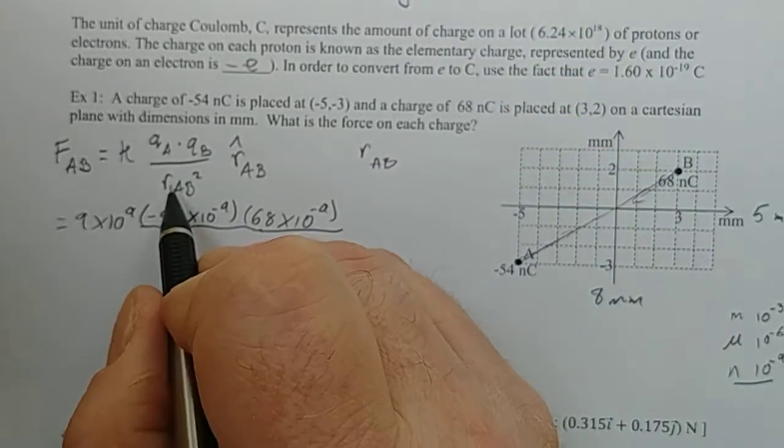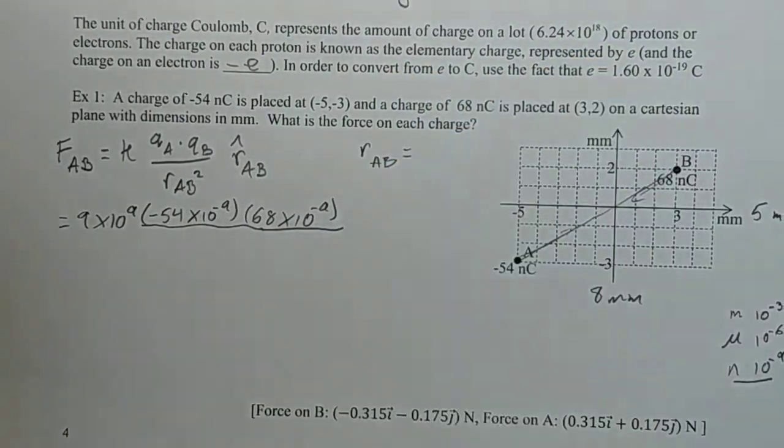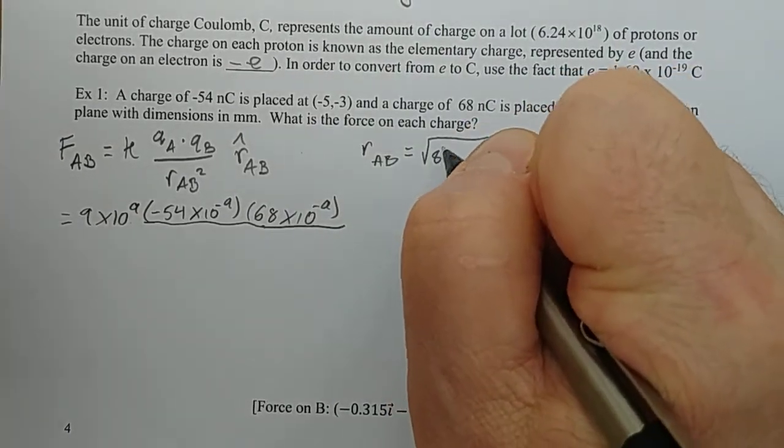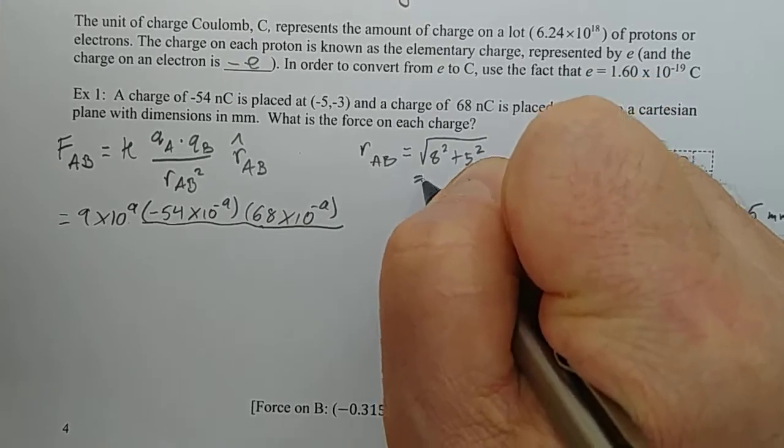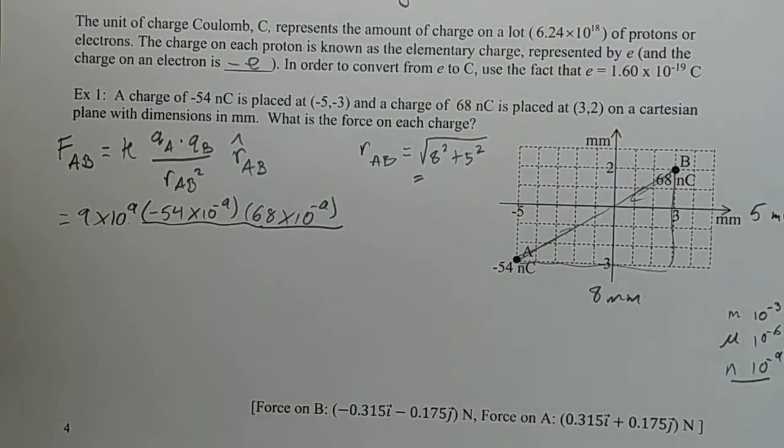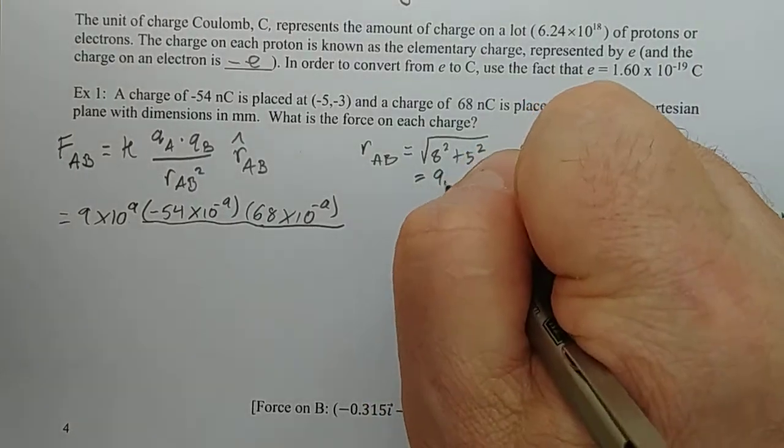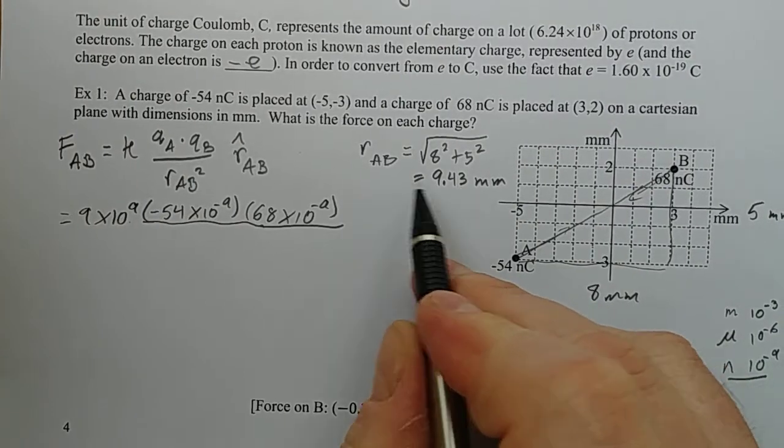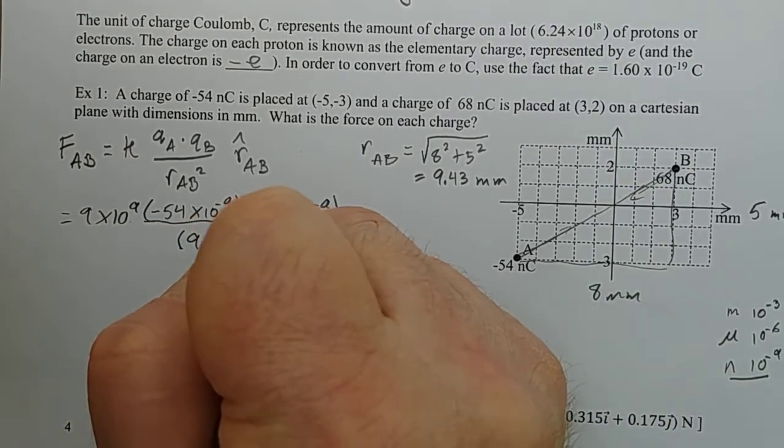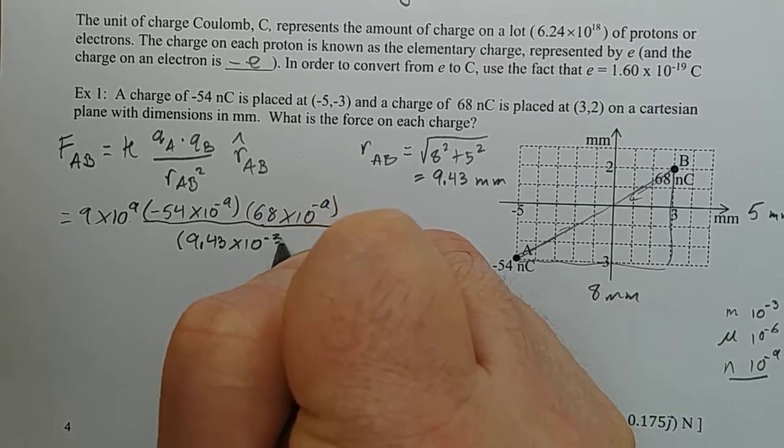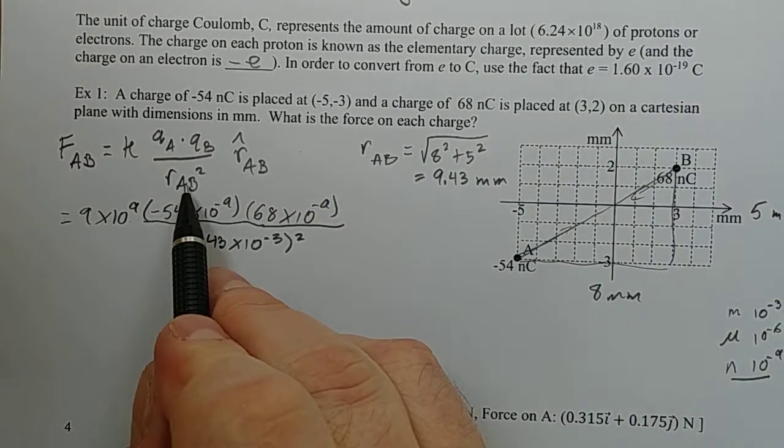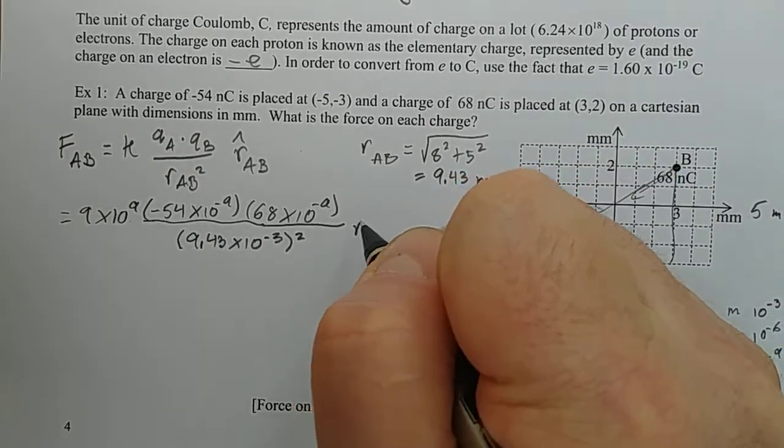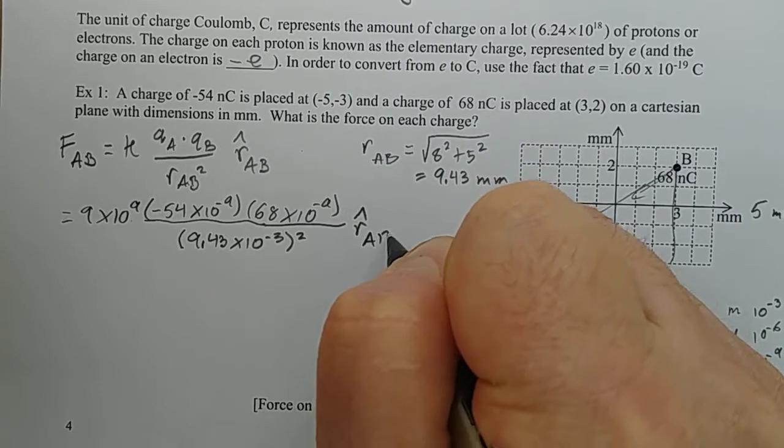And QB is 68 times 10 to the negative 9. And RAB, I better find out what RAB is. This is just the magnitude I want there. It is 8 across and 5 up, so it's the square root of 8 squared plus 5 squared, which is 9.43. But that's in millimeters, so I better be careful when I write it down here. It's 9.43 times 10 to the negative 3 squared. That's the distance from A to B, 9.43 millimeters. And all of that's going to be multiplied by R hat from A to B, which I will deal with later.